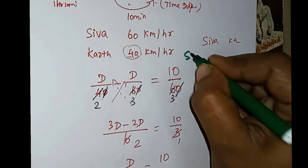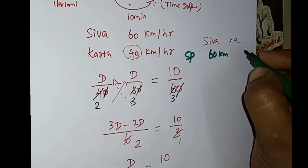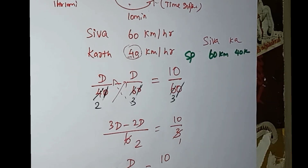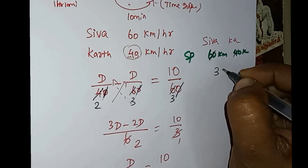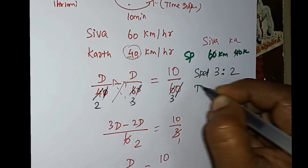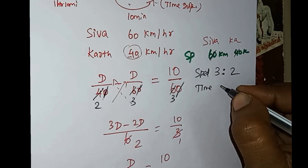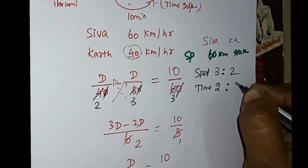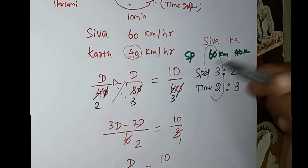The speed of Shiva is 60 km per hour and of Karthi is 40 km per hour. The ratio is 3 to 2. Since speed and time are inversely related, the time ratio is 2 to 3. The distance is straightforward from here.